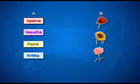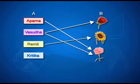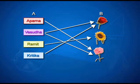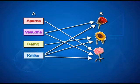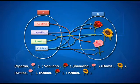There is a set A which lists out persons, and set B where we have three flowers: rose, sunflower, and carnation. I know the personal preferences of these four people in terms of what they like out of these three flowers. Aparna likes carnation, Vasudha likes rose and carnation, Ramit likes sunflower, whereas Kritika likes rose, sunflower, and carnation. So we are looking at some kind of an association between set A and set B.